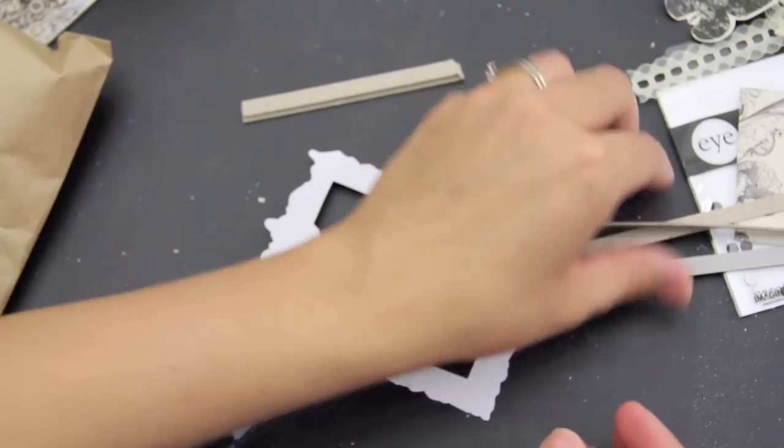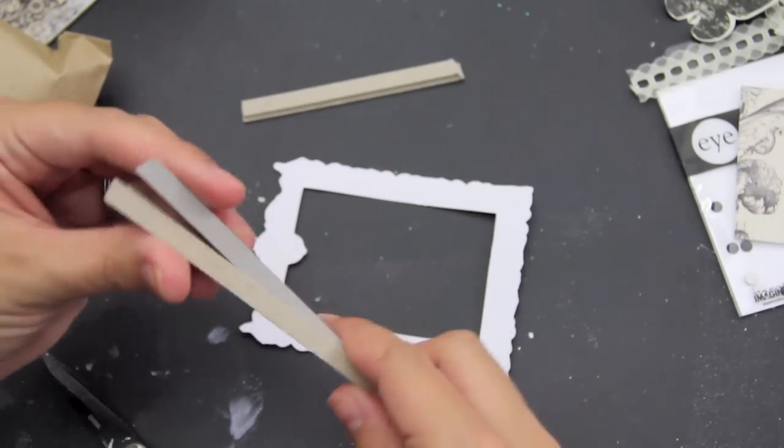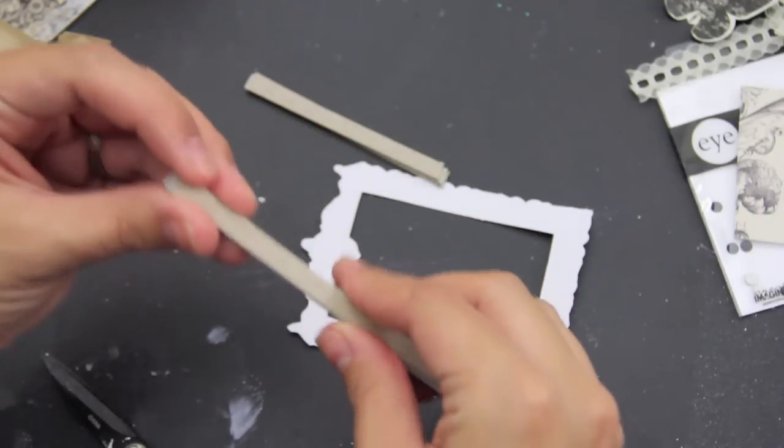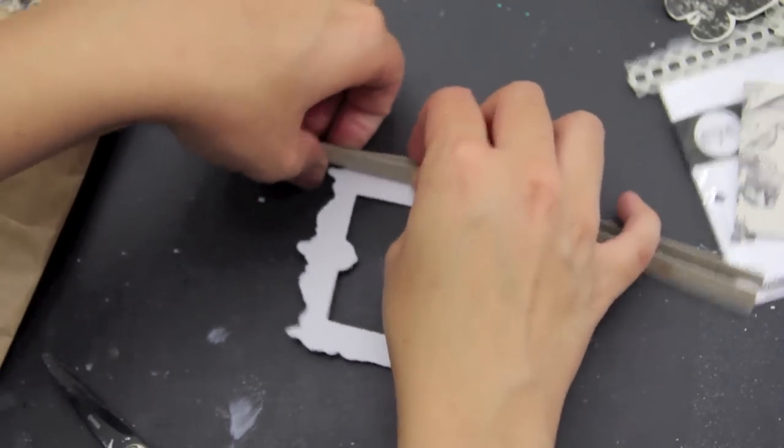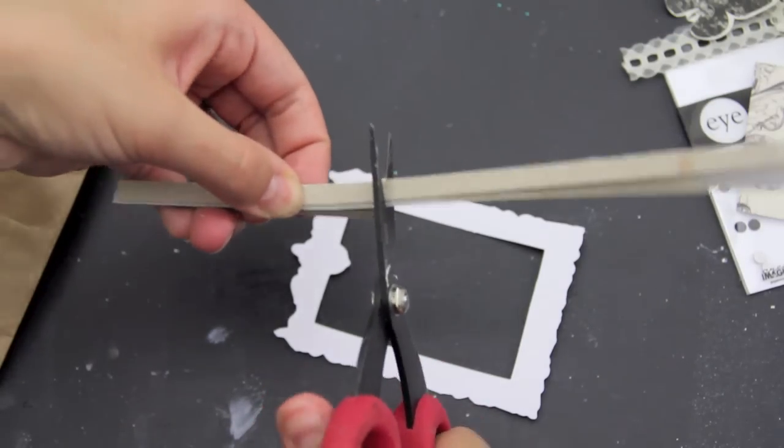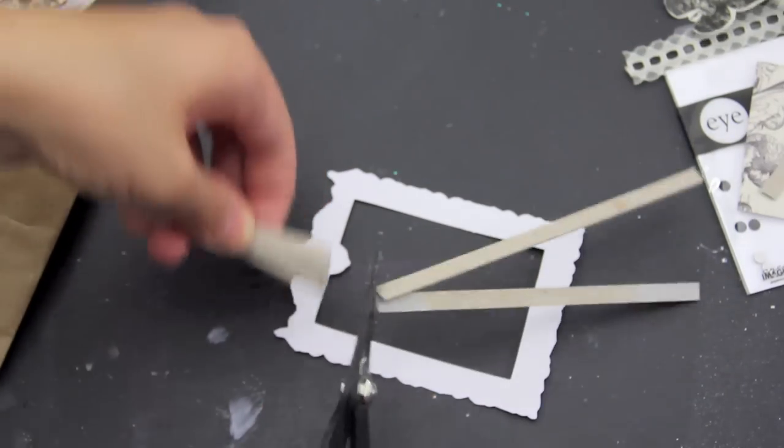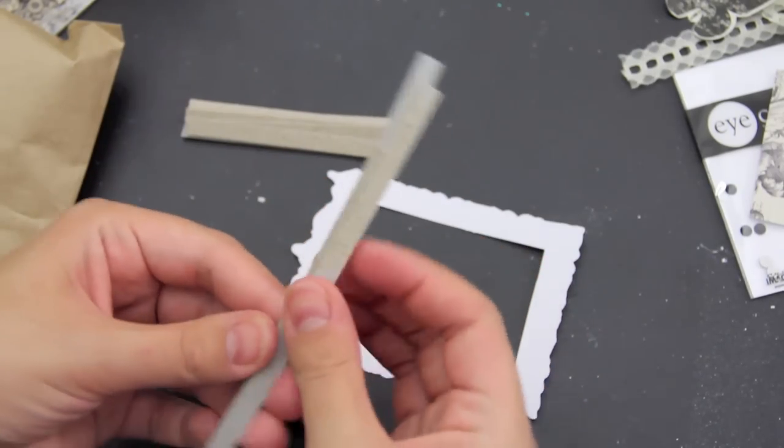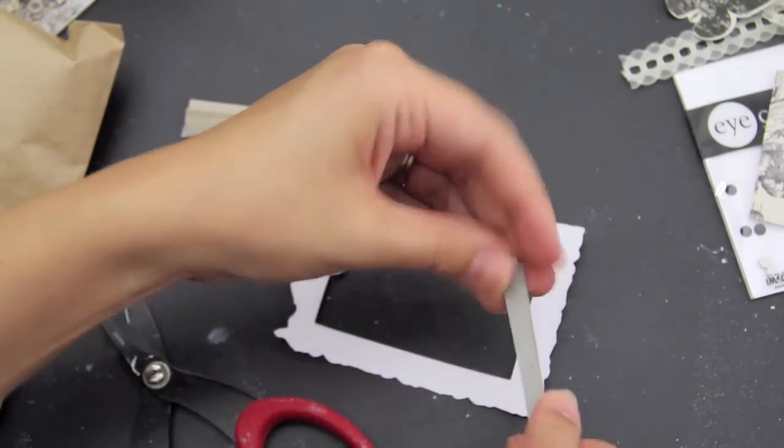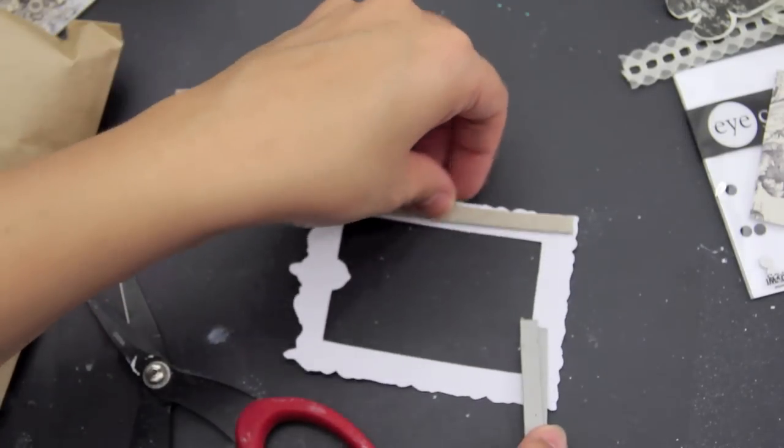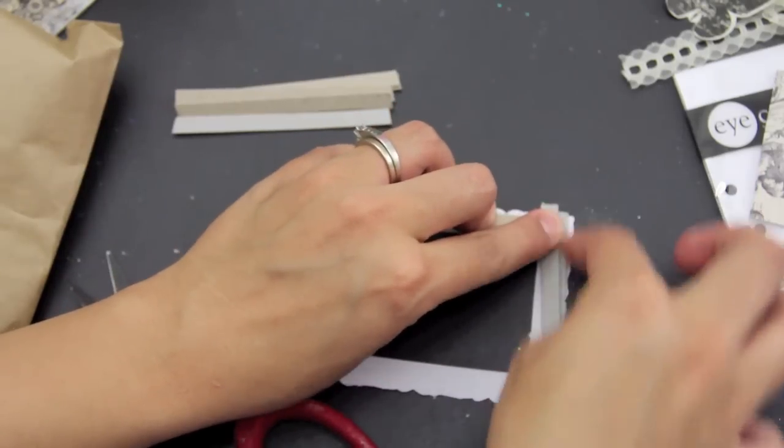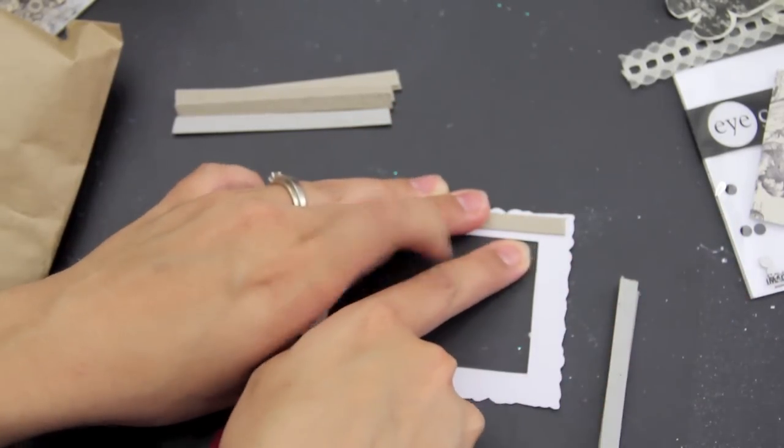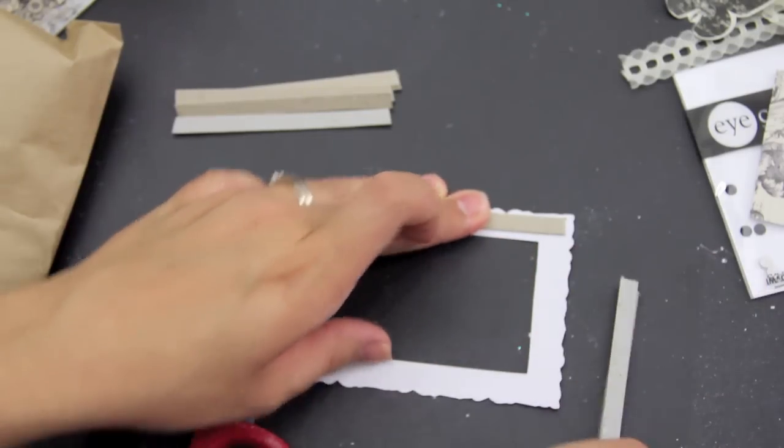Two of them are going to be the same length because they're going to be the sides here. You can also paint these or color them if you don't want the cardboard color. Then we're going to do the bottom. You've got to remember that this is going to be kind of down there, so you don't want to put it fully across. It's going to be just from this part to this part right here.